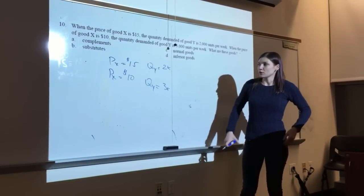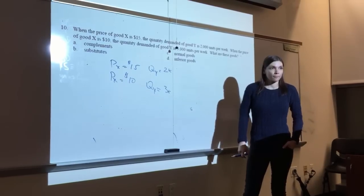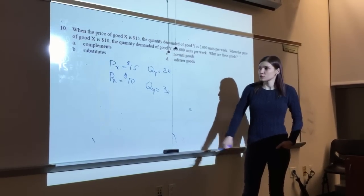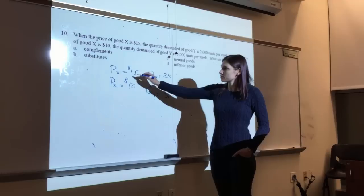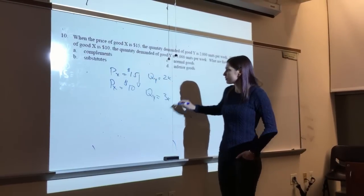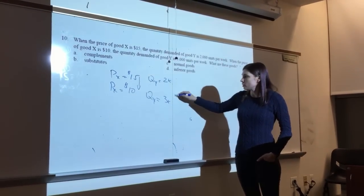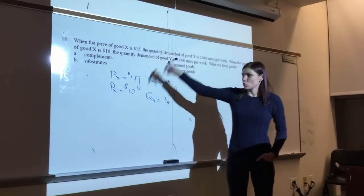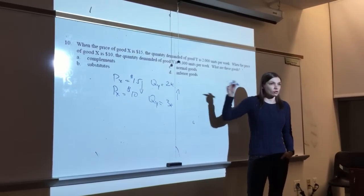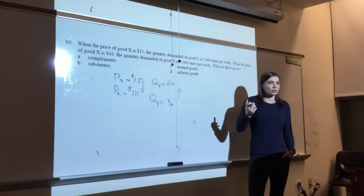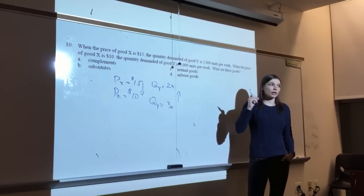And so what is it here? Is it positive or negative? So look what happened. As the price of good X went down, the quantity demanded for good Y went up. So as one goes down, the other goes up. So the cross-price elasticity would be positive or negative?